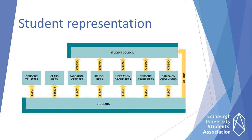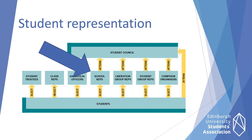Students of each individual school elect three school reps: a convener, an undergraduate vice convener, and a postgraduate vice convener. They bring students and class reps together in their school to create an academic community and make sure that the student voice is adequately represented. They represent students in school committees and in meetings with the school's senior management to make decisions affecting all students in that school, and work very closely with class reps to run meetings, events, and campaigns that are particularly relevant to their subject area.